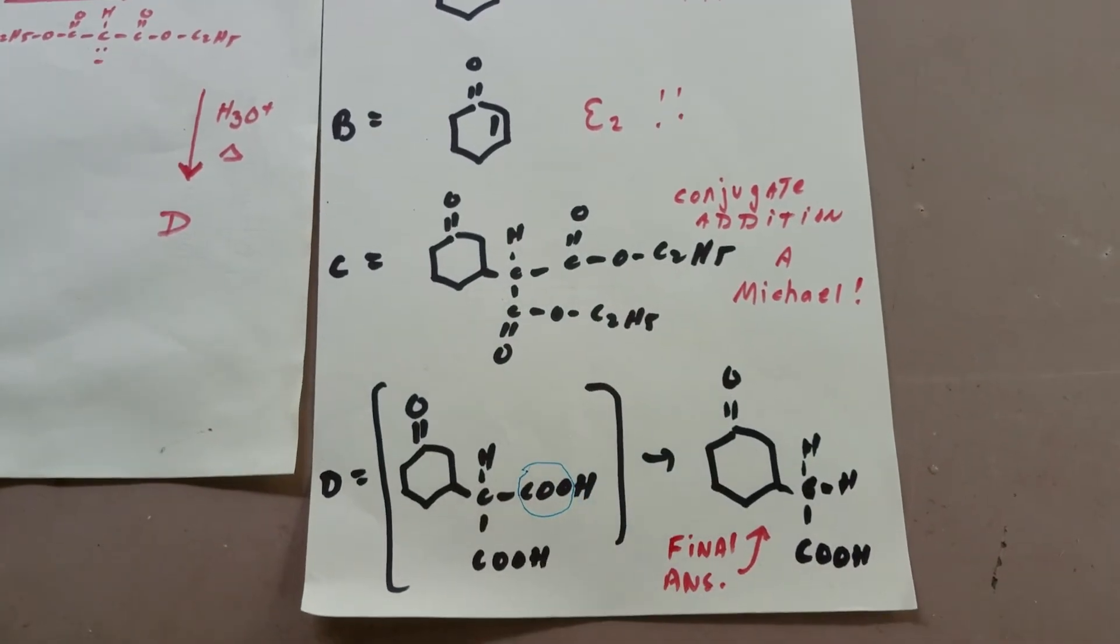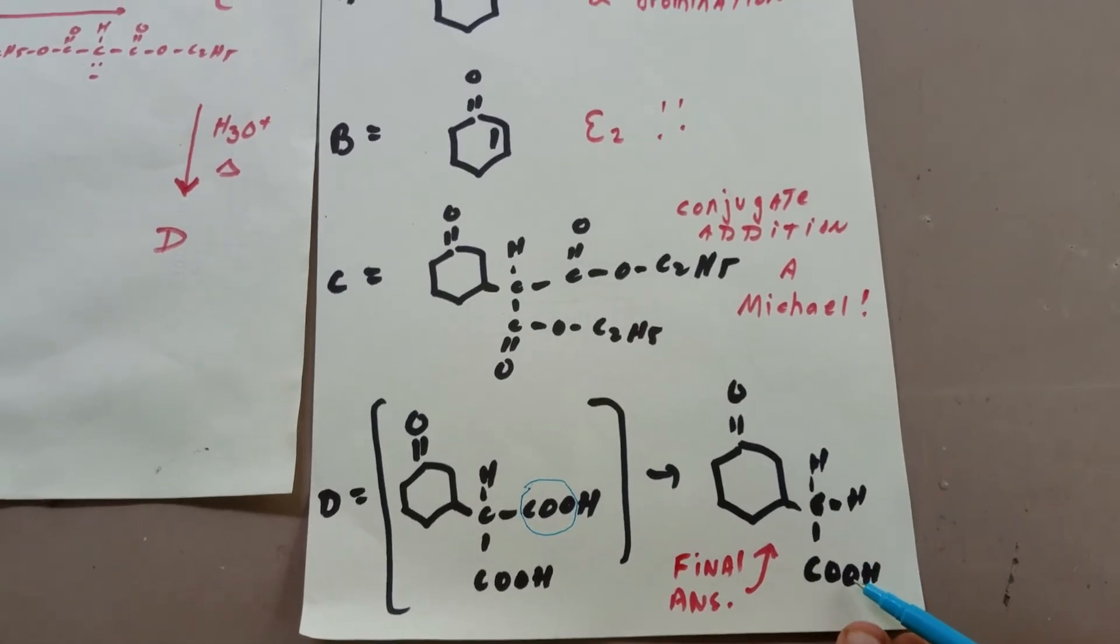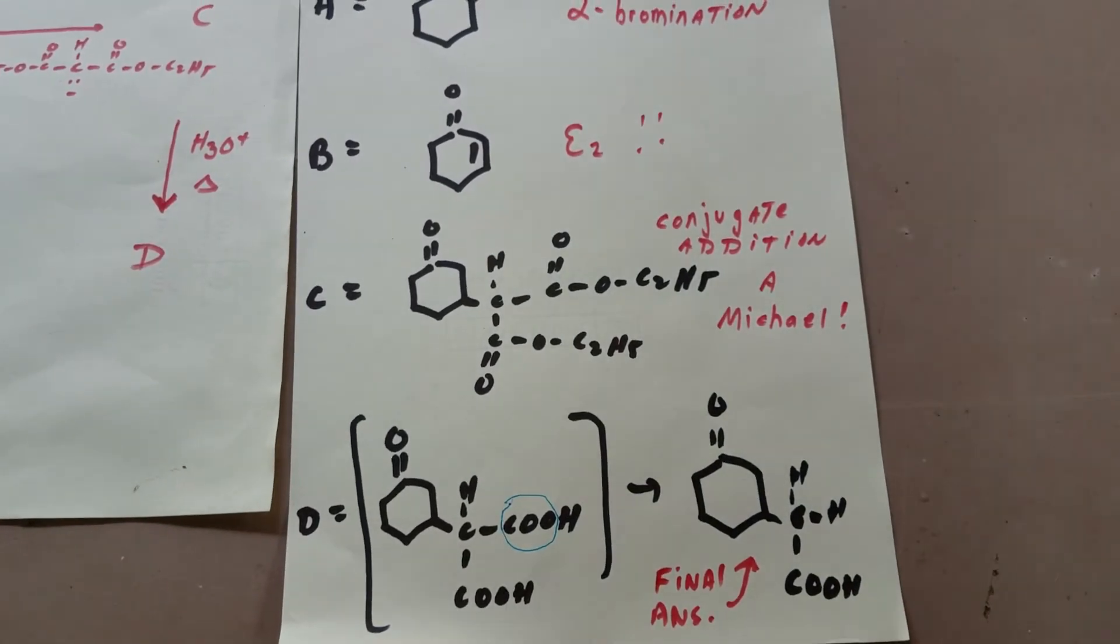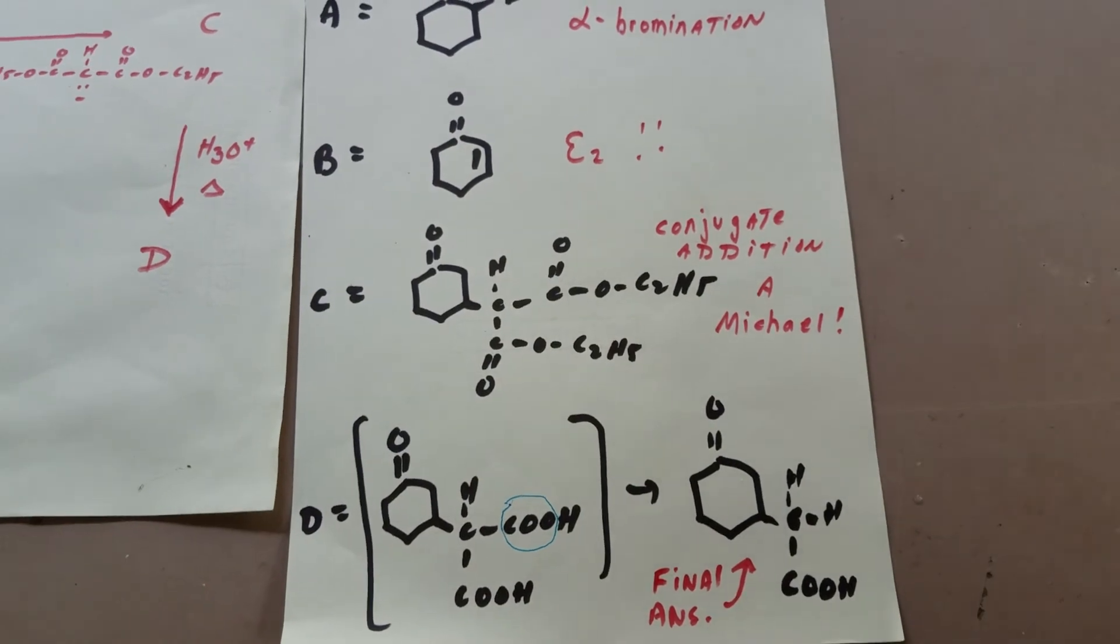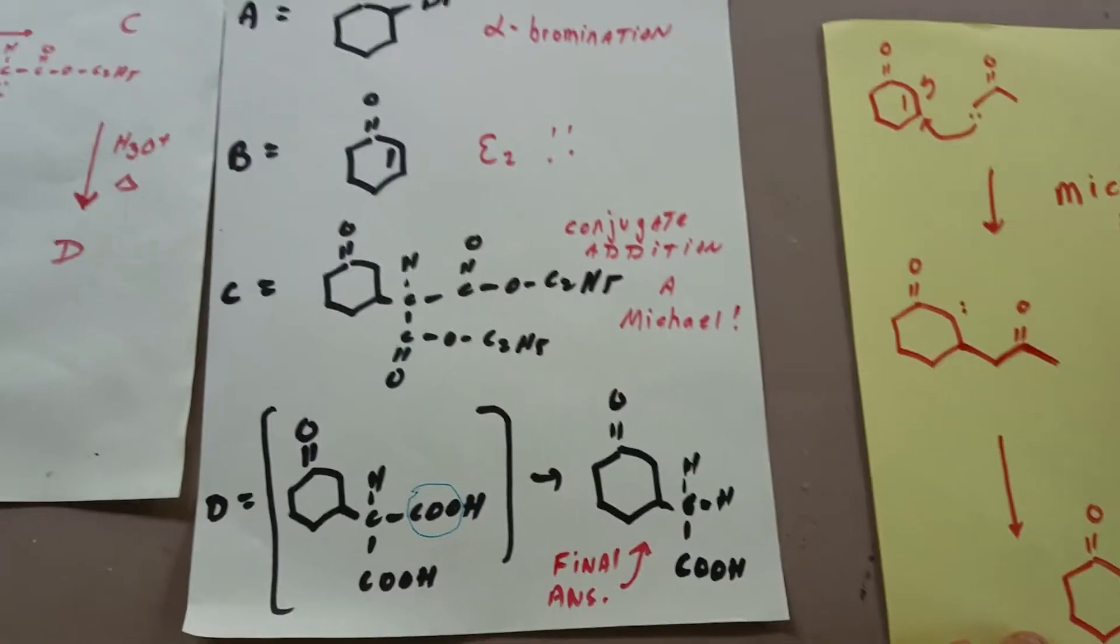And when this is lost, you just simply connect this H to here, and there's your final answer. Now if you wanted to see how I exactly would do something like this, if you just take a quick look at an example of a Michael reaction...